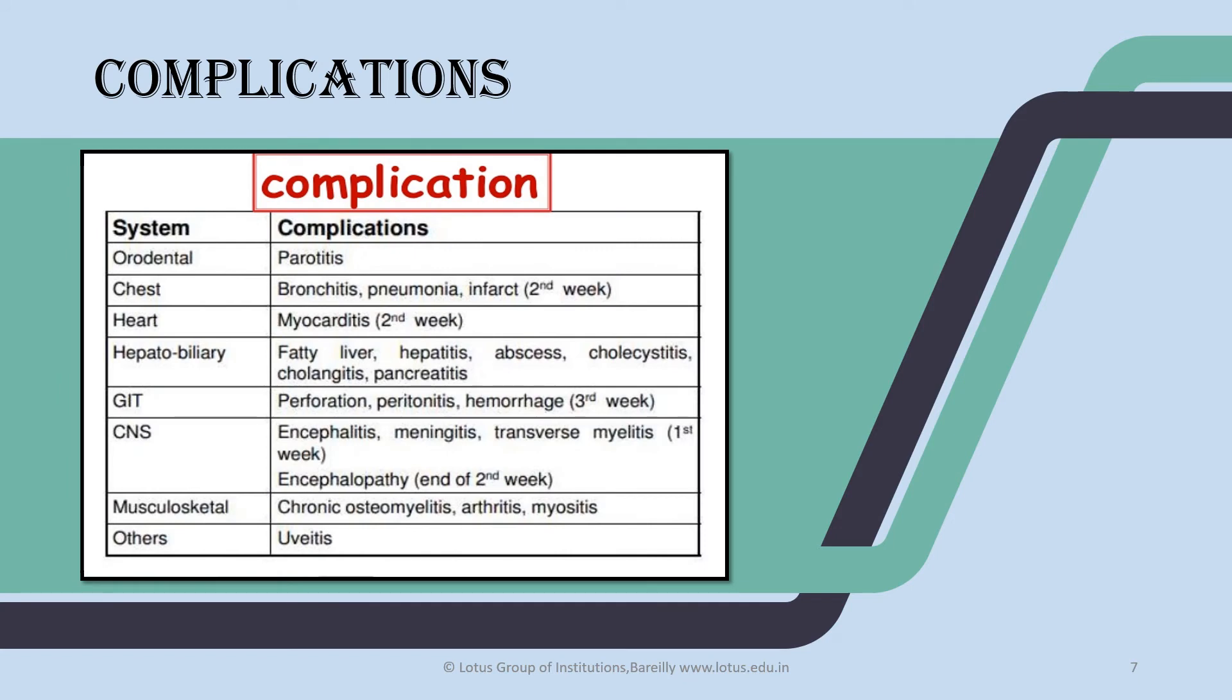Complications: inflammation of the parotid gland (parotitis), inflammation of bronchitis, pneumonia, heart complications like myocarditis, hepatitis, GIT gastroenteritis, CNS complications like meningitis, myelitis, and other conditions like arthritis, chronic osteomyelitis. All these are infections of different parts of the body, so mostly these are complications of typhoid fever.